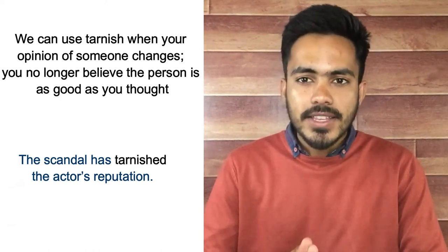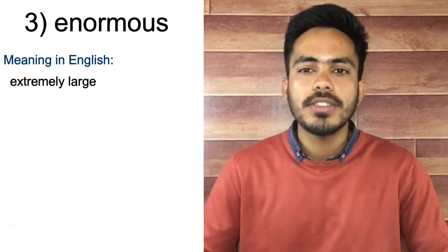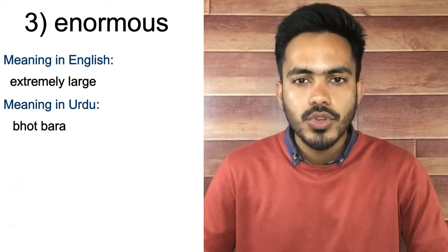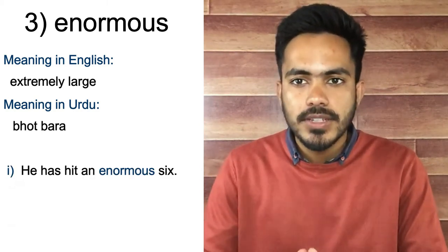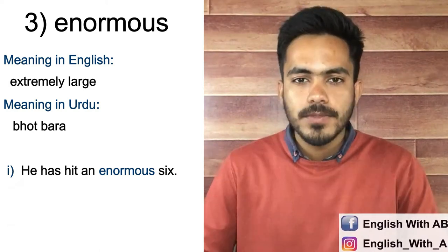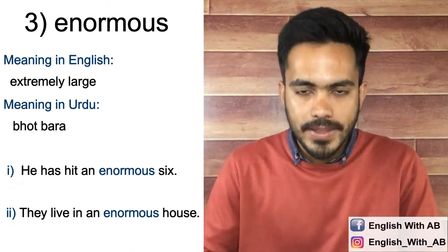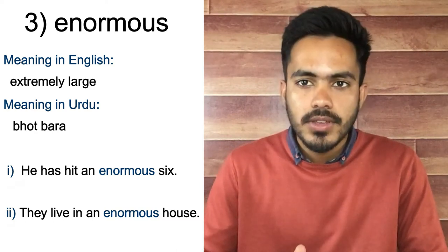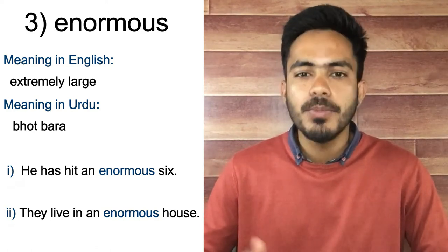On number three we have 'enormous'. Its meaning in English is extremely large, and in Urdu it means بہت بڑا — very big. If you watch cricket, you might have heard a commentator say 'He has hit an enormous six.' Second example: 'They live in an enormous house.' We can use 'very big' instead, but enormous is a more advanced word, so if you want to sound like an advanced speaker, use enormous.